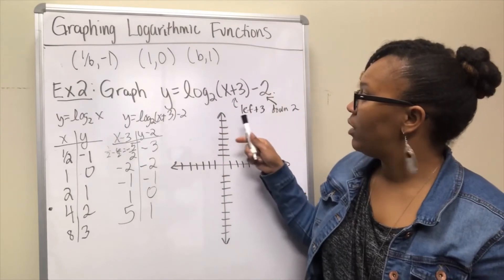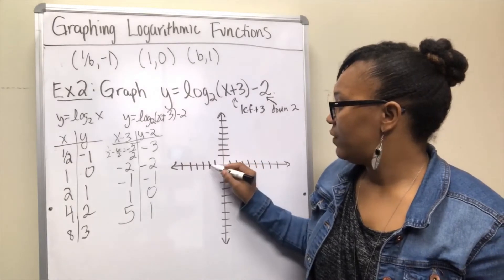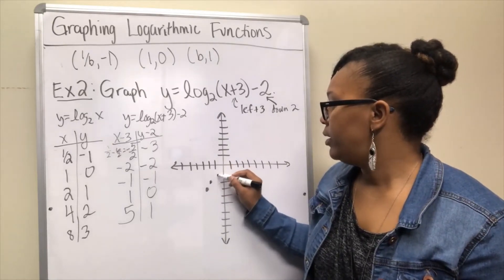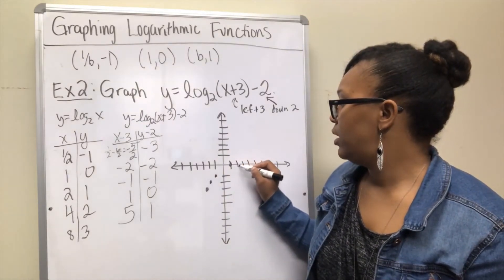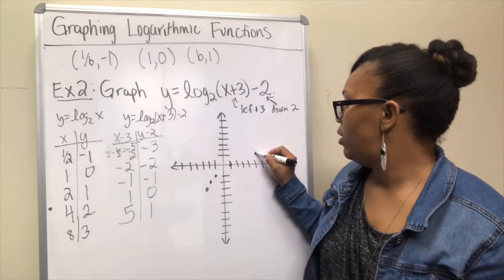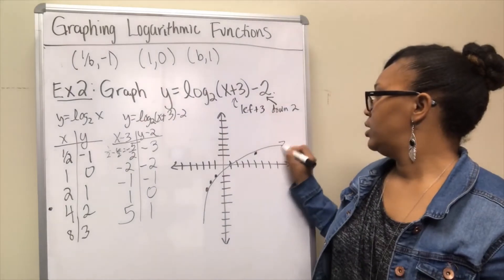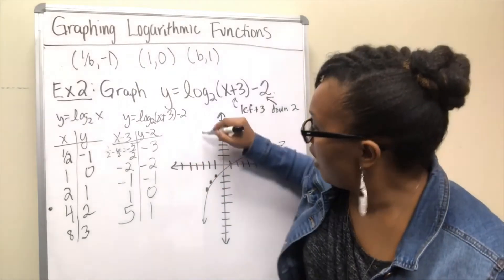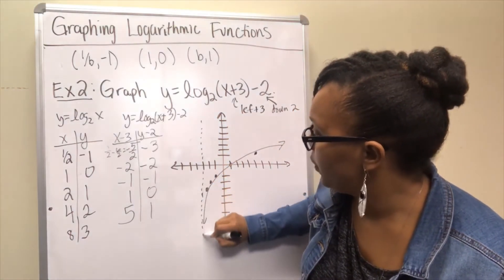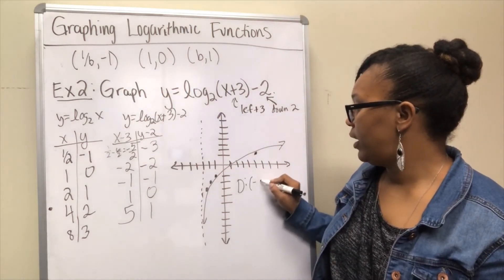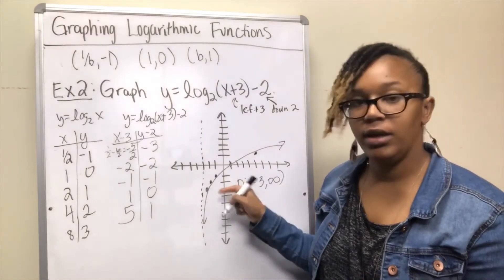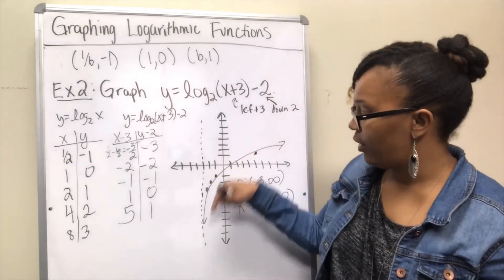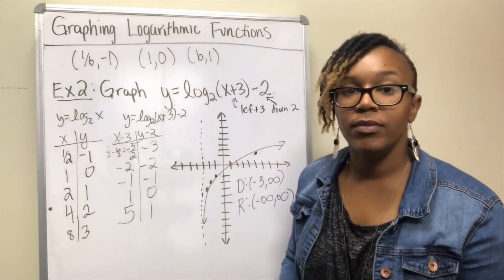Plotting those transformed points: (-2.5, -3), (-2, -2), (-1, -1), (1, 0), and (5, 1). The vertical asymptote shifted from x = 0 to x = -3. So the domain for this graph is (-3, ∞) and the range remains (-∞, ∞).